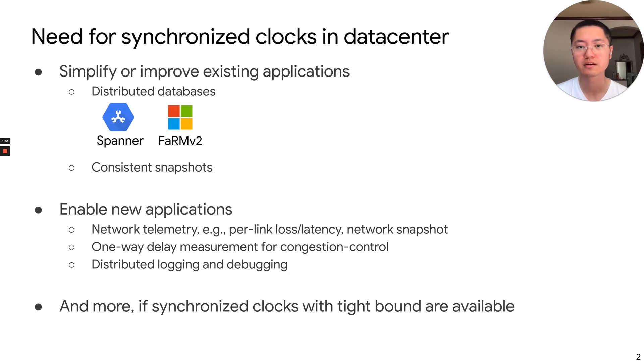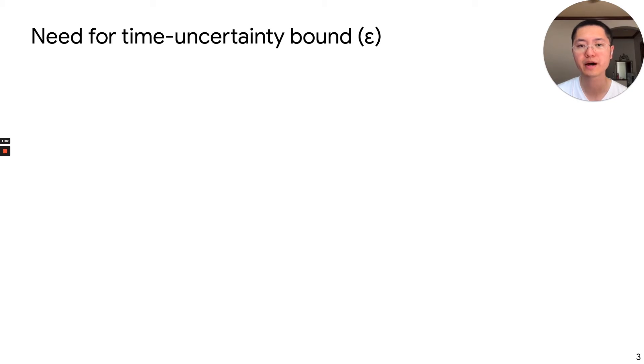Unfortunately, most traditional clock synchronization schemes only provide best effort. They don't provide a bound on how large different clocks can drift away. And this bound is actually the key metric in production. It's usually called the time uncertainty bound, which was introduced by TrueTime into production. And it's very important for the correctness of applications.